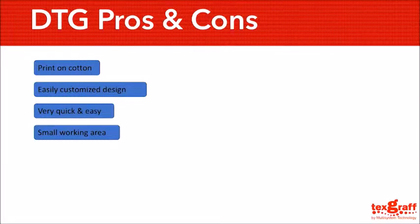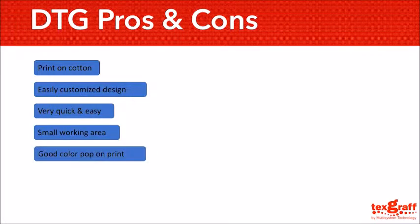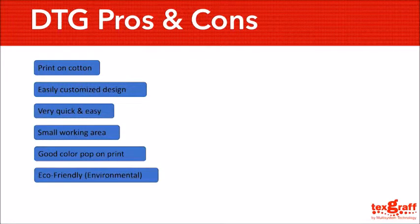You can have it even placed in your living room if you like working at home — we actually do have customers that have DTG printing set up in their bedroom. The fifth point is good color pop on print, meaning you can see colors immediately after printing, unlike sublimation where the colors would be pale on the transfer paper until sublimated to the fabric. The last point is that the inks used by DTG are eco-friendly, don't give out any waste, and some machines and inks come with green certificates.